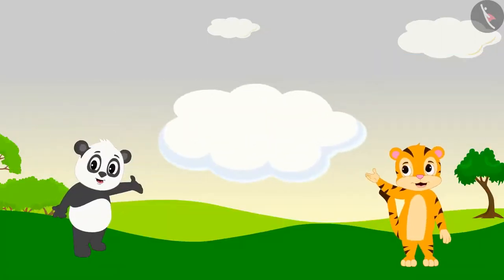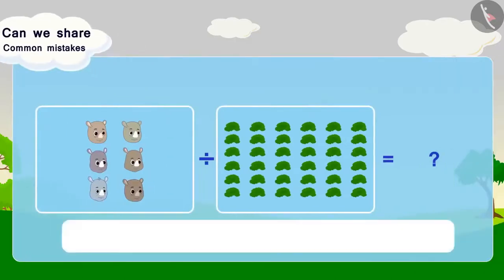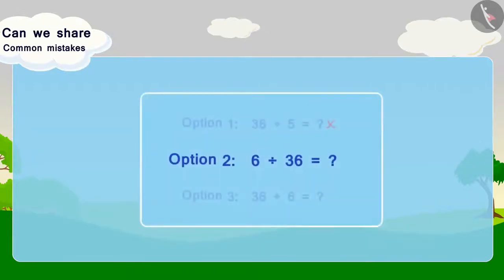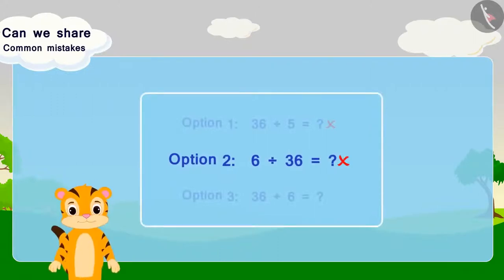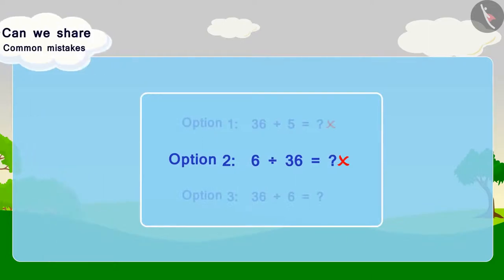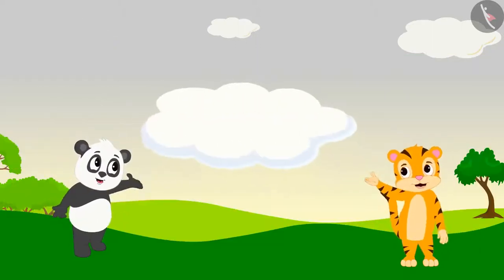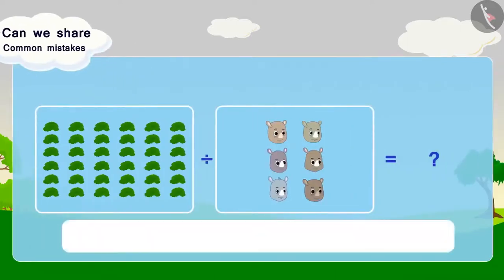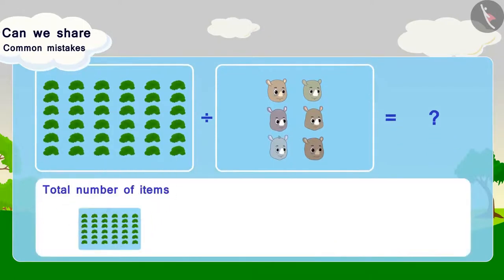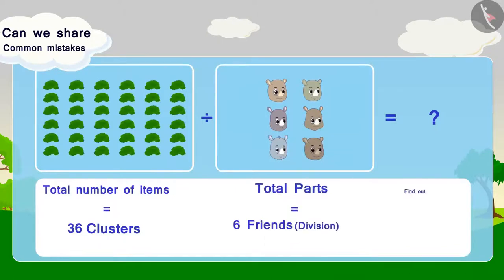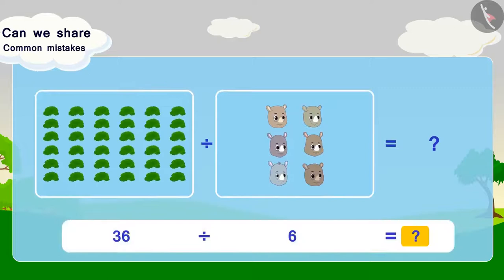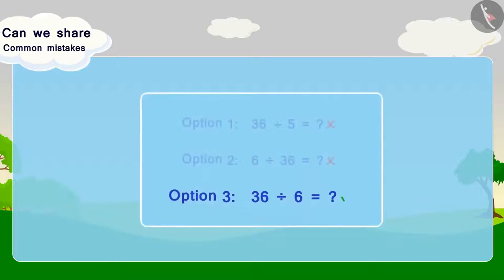Now, let's look at option 2. In this option, 6 friends are being divided into 36 grass clusters, which is wrong according to this question. This is a very common mistake we make while performing division. Now let's look at option 3: 36 clusters divided among 6 friends equals how many clusters per friend. Here we have divided 36 clusters among 6 friends — it is the right option.